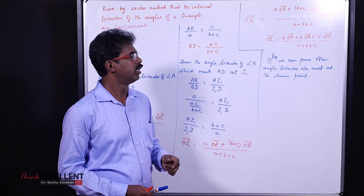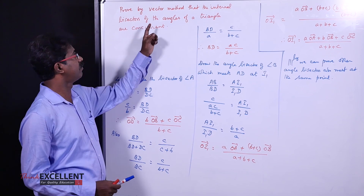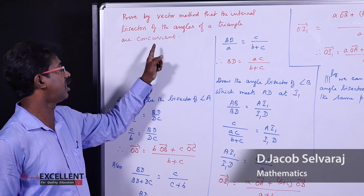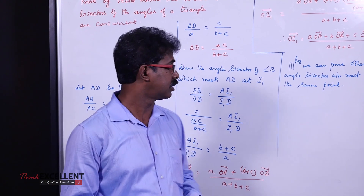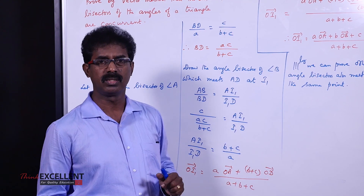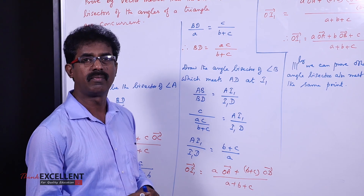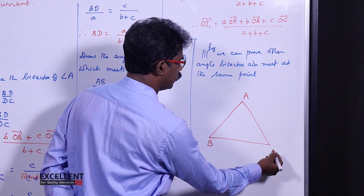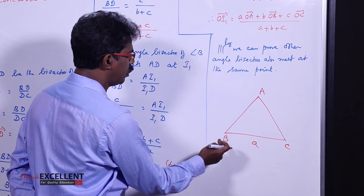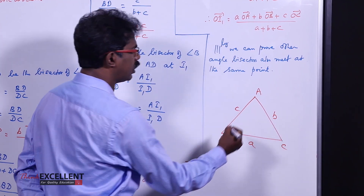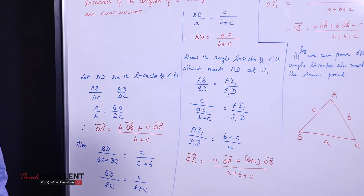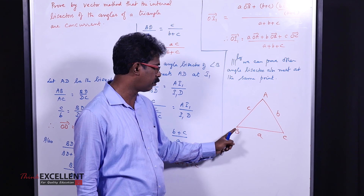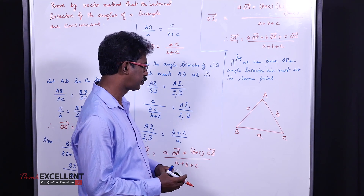We are going to see one very important question: prove by vector method that the internal bisectors of the angles of a triangle are concurrent. Concurrent means passing through the same point. To do this, first we need basic representations of a triangle. If ABC is a triangle, the side opposite to A is small a, opposite to B is small b, and opposite to C is small c. These are the basic representations.